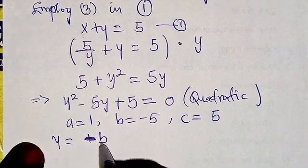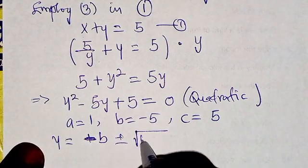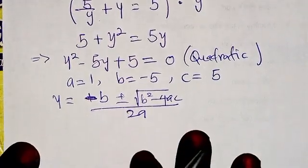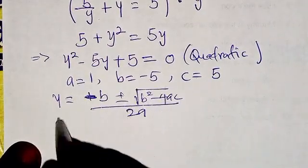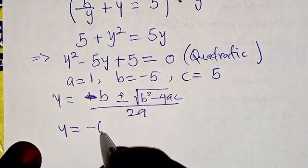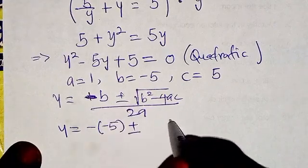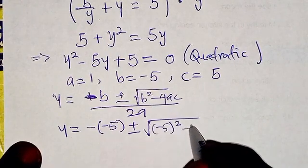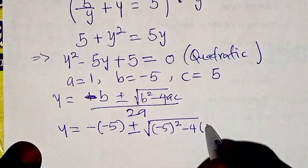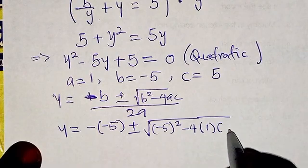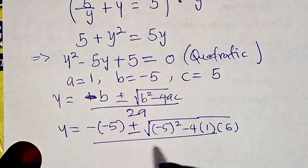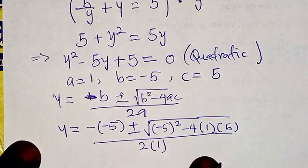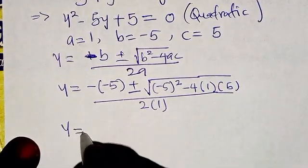The quadratic formula states y equals minus b plus or minus the square root of b squared minus 4ac, all over 2a. Substituting: y equals minus negative 5, plus or minus the square root of negative 5 squared minus 4 times 1 times 5, divided by 2 times 1.